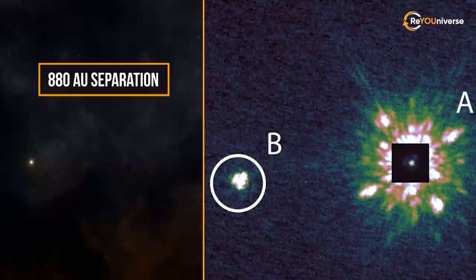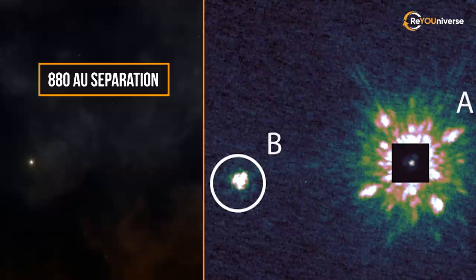An object on its circular face-on orbit at the current 880 AU separation and a total system mass of 1.9 solar masses would have a velocity of 1.4 kilometers per second and a period of 18,600 years, they wrote.